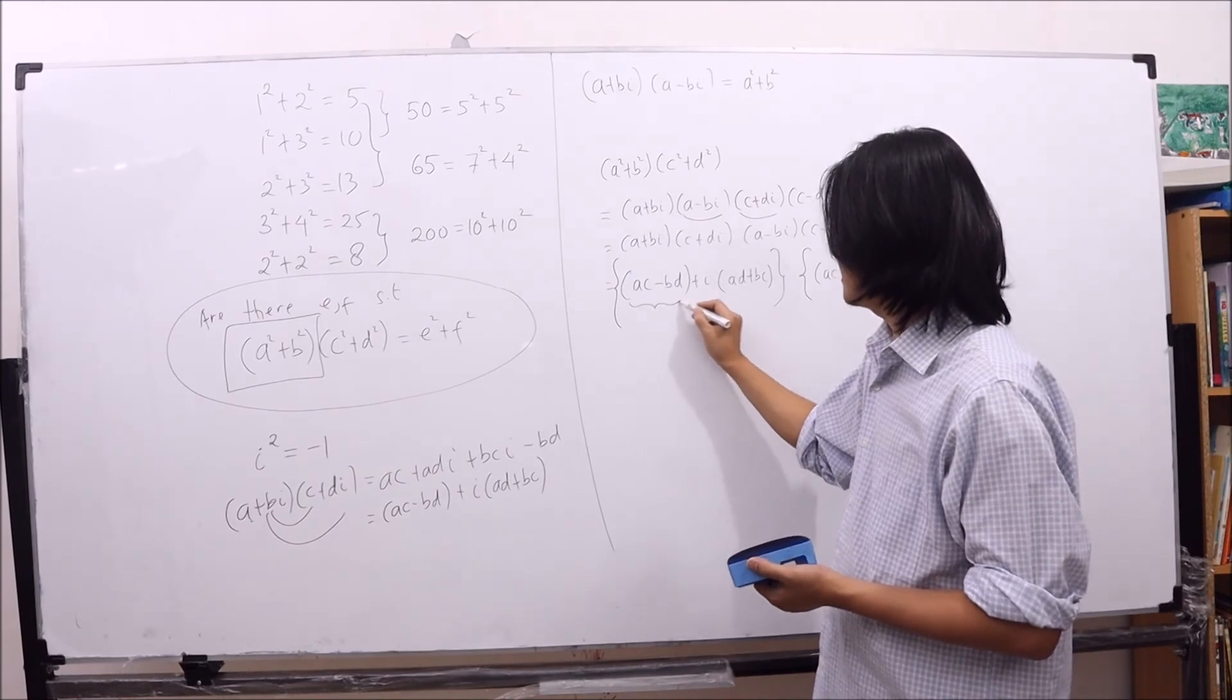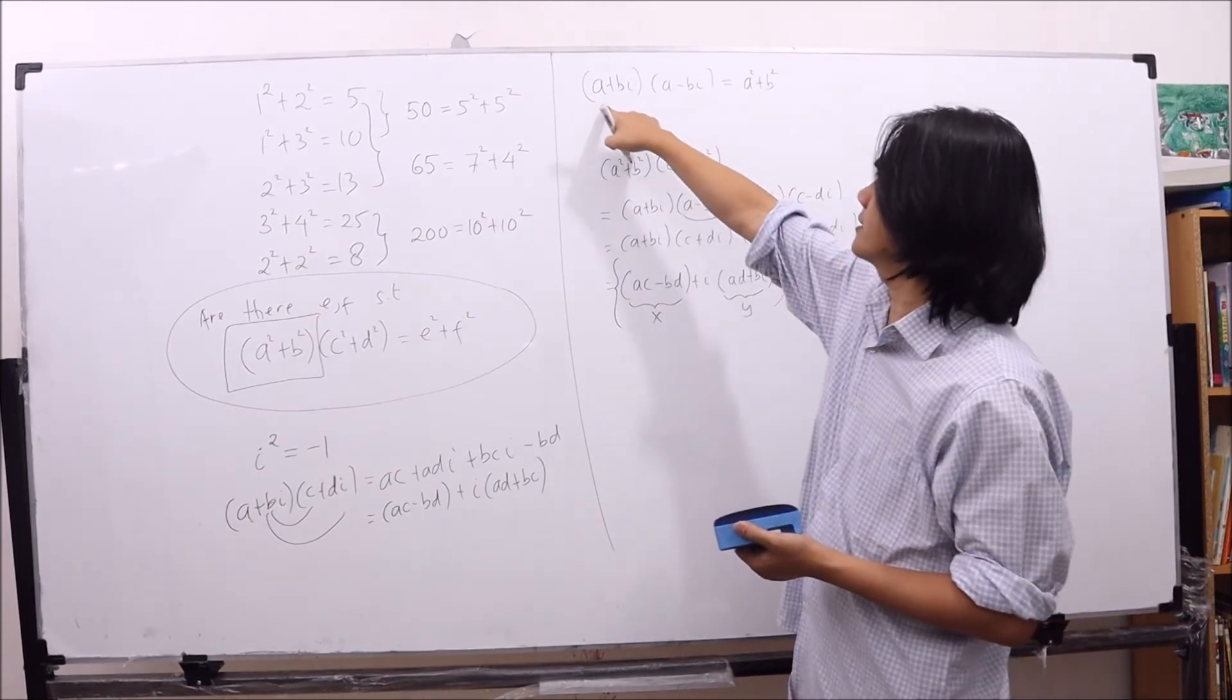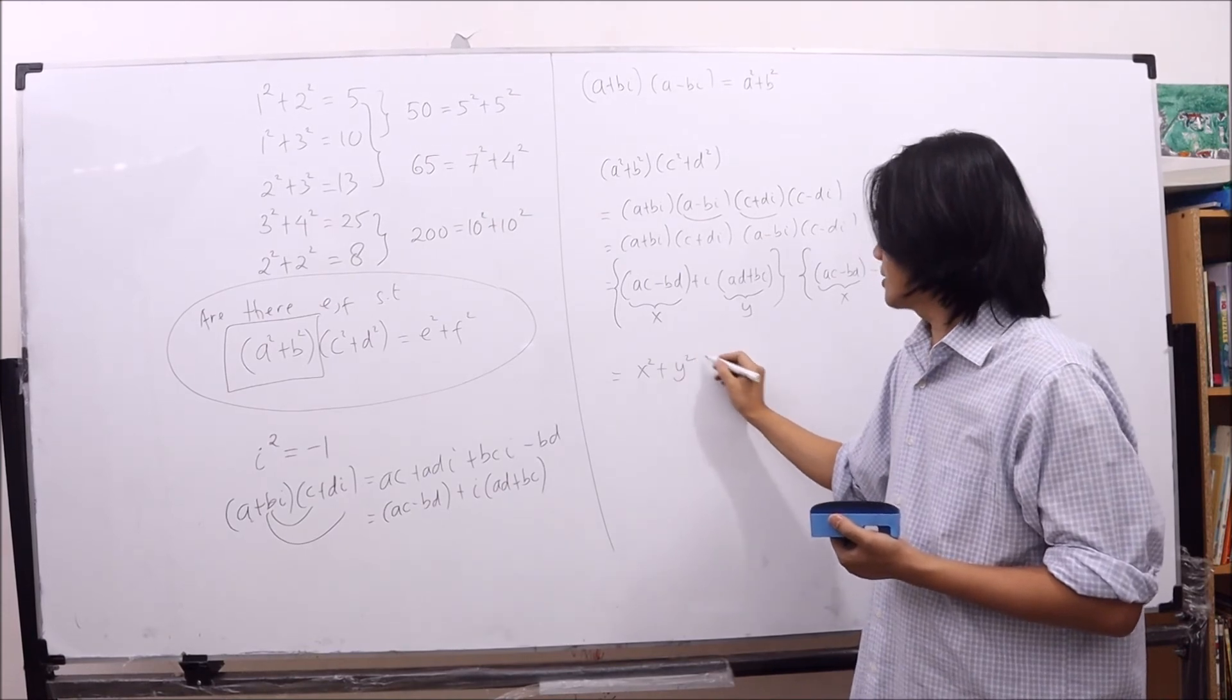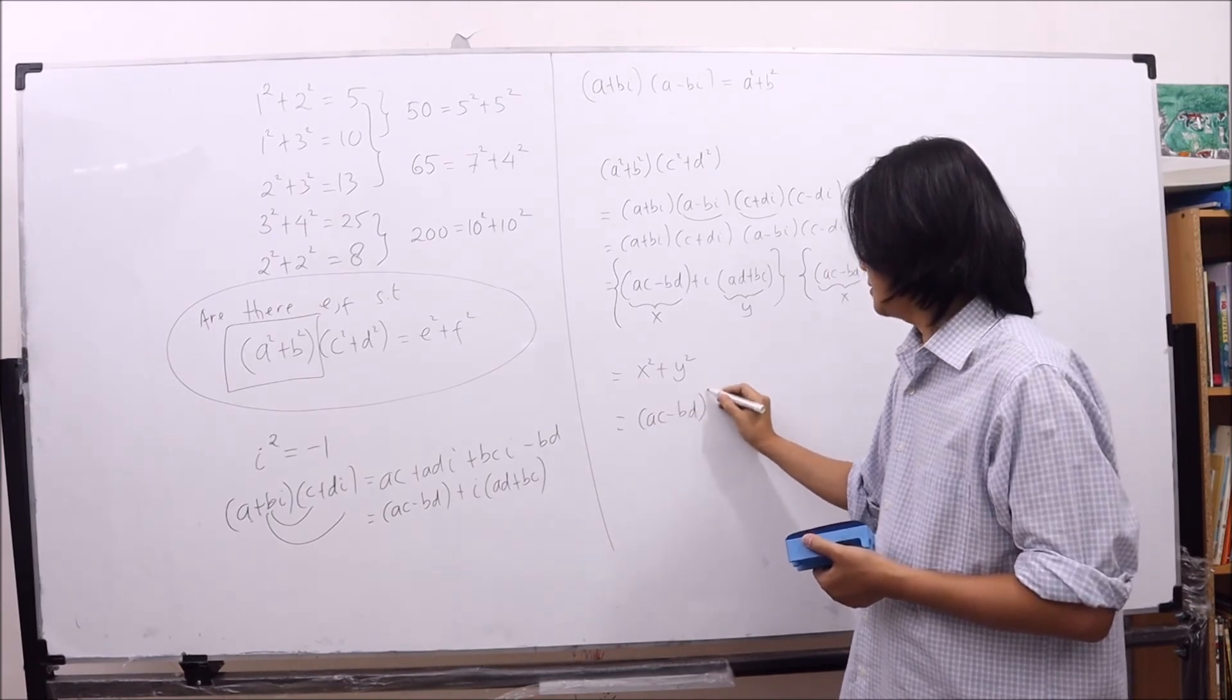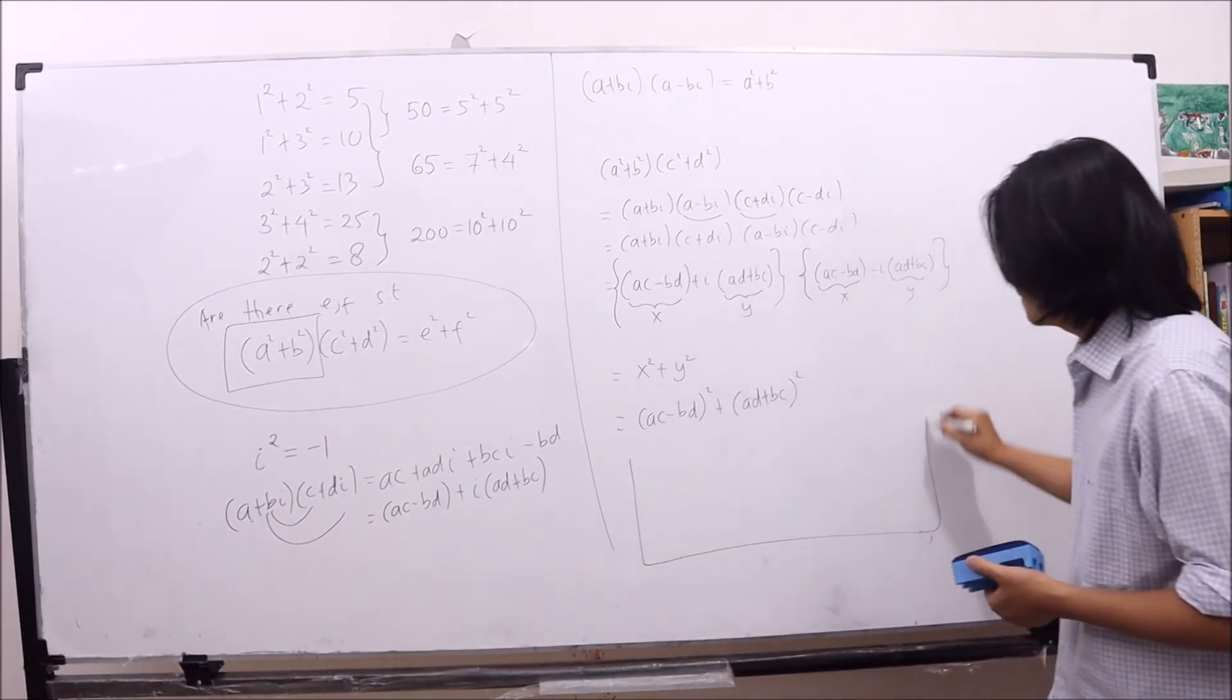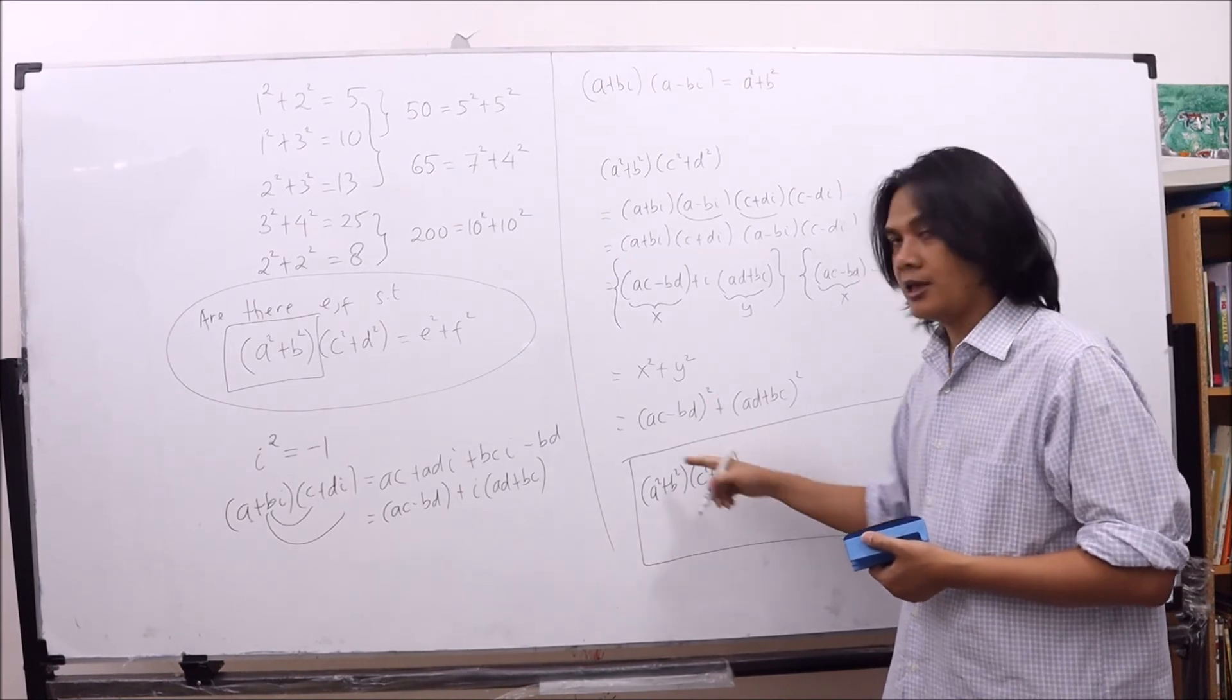But if we call this guy as x, and this guy as y, this is x, this is y. So this is something of this type: x plus y i times x minus y i. And the result is x squared plus y squared, where the x is a c minus b d, and then the y is a d plus b c squared. So in general, we conclude that the product between a squared plus b squared and c squared plus d squared is equal to a c minus b d squared plus a d plus b c squared.